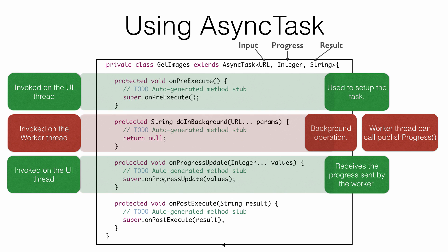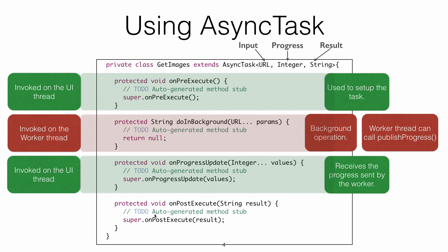When doInBackground finishes, it returns a value. That value is passed to the main thread through onPostExecute. So onPostExecute is called after the background operation is done, and it receives the result.